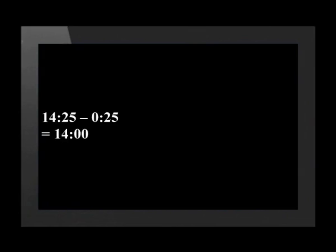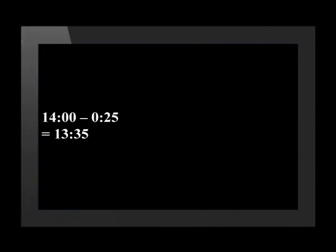25 minutes past 2 subtract 50 minutes is quite a complicated problem, so let's look at how to make it more simple. First let's subtract 25 minutes from 2:25, which gives us the time of 2 pm. We've subtracted 25 minutes, which means that we still have another 25 minutes to subtract. This gives us a time of 25 minutes to 2, meaning we have to be on the train by 1:35 at the latest.